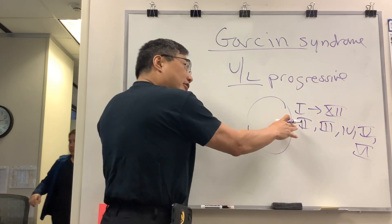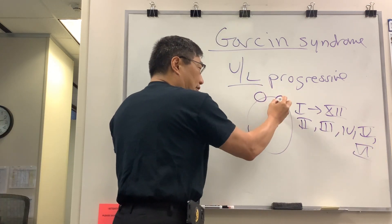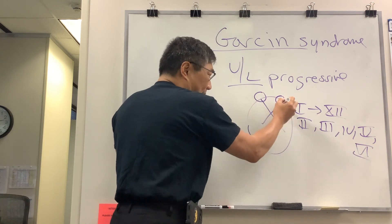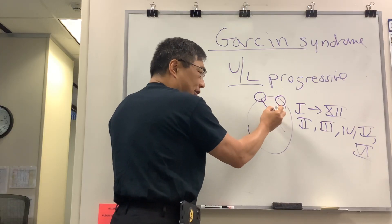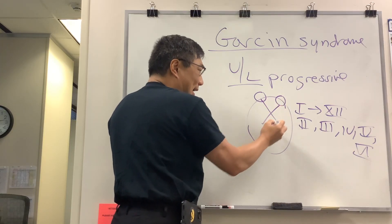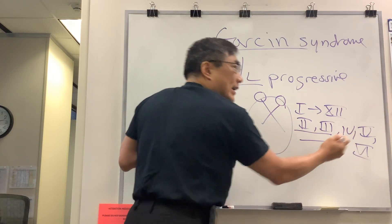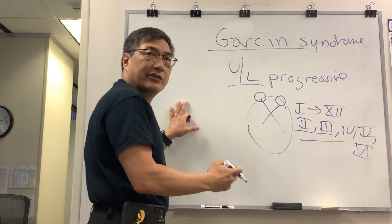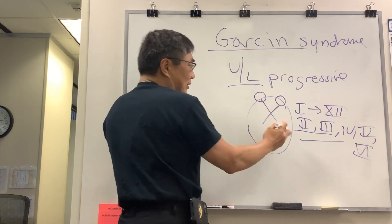However, because cranial nerve two is the optic nerve and normally runs in the intraorbital portion and intracranial portion at the chiasm, that one doesn't really run with the other cranial nerves. So when we're talking about a typical Garson syndrome...